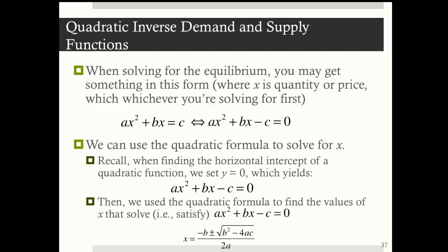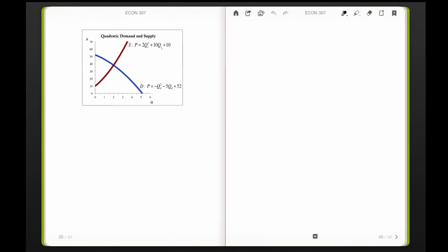Let's go through an example. I've got my supply equation and my demand equation. I'm asked to solve for the market equilibrium, so I'm going to use the substitution method. I'm going to substitute this into here. So what do we get? We get 2q² + 10q + 10 = -q² - 5q + 52.